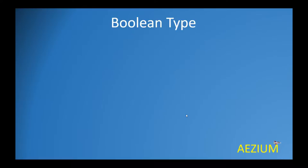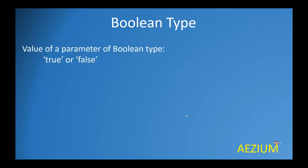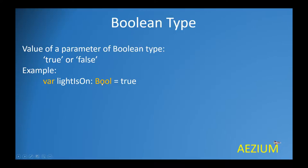Let us start with the Boolean type and give a brief description. A parameter which is of Boolean type can only have two values: true or false. An example of a declaration of a Boolean variable is shown as 'light is on', which is the name of the variable. It's of type Bool and we are assigning a value of true to it. Declaration and assignment follows the same syntax as in the previous cases.